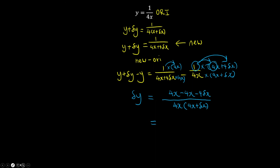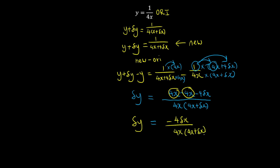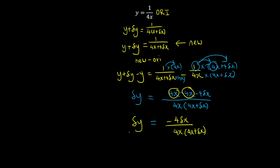After cleaning up, we see that 4x minus 4x cancels, leaving delta y equal to negative 4·delta x over the denominator 4x·(4x plus 4·delta x). But our objective is to find delta y over delta x, so we divide both sides by delta x. The delta x and delta x cancel, and the 4 and 4 cancel, leaving delta y over delta x equal to negative 1 over (4x·(4x plus delta x)).